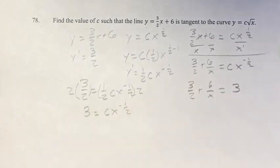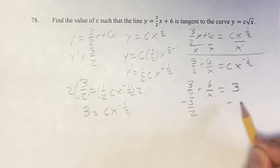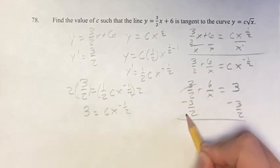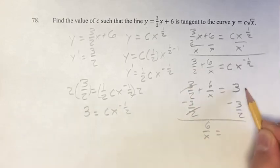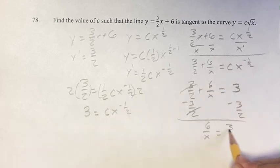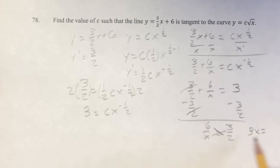Now we can solve for x, subtracting 3 halves on both sides. We get 6 over x equals 3 halves. We can cross multiply to get 3x equals 12, therefore x equals 4.